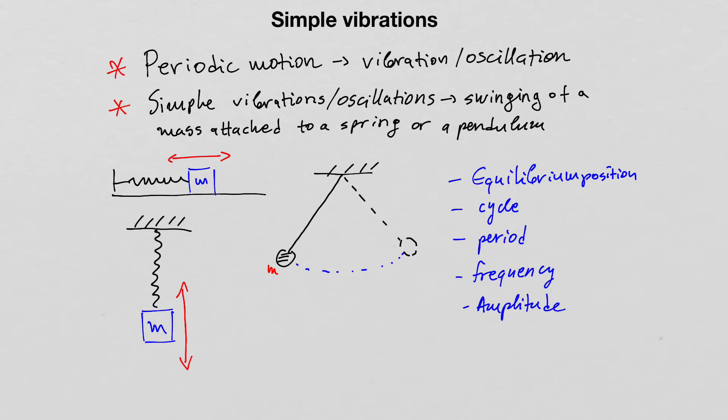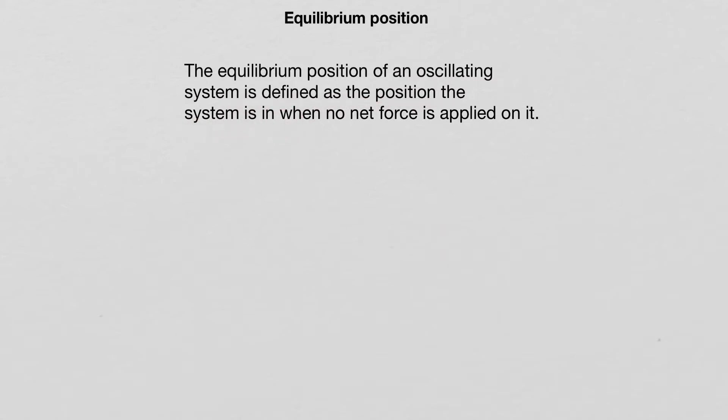Let's define those parameters. The equilibrium position of an oscillating system is defined as the position the system is in when no net force is applied on it.